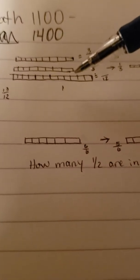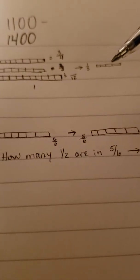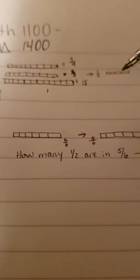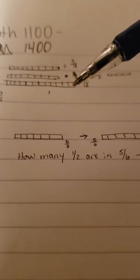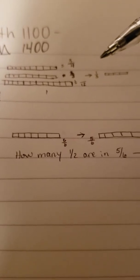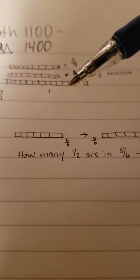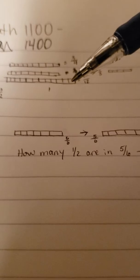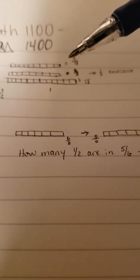Our next number is 1/3, so we want to represent 1/3 of 12. That's this rod right here which has four units. These four units represent one-third of the 12-unit rod. We could place three of these rods stacked on top of the 12-unit rod and they would fit perfectly with no extra units.